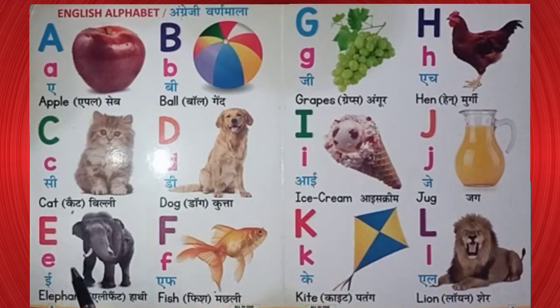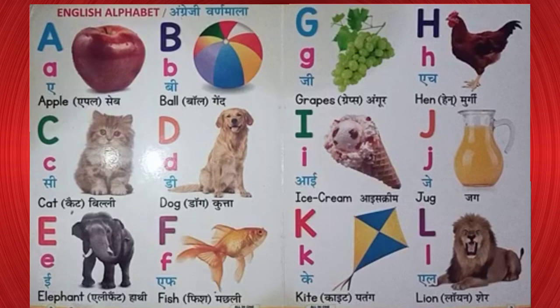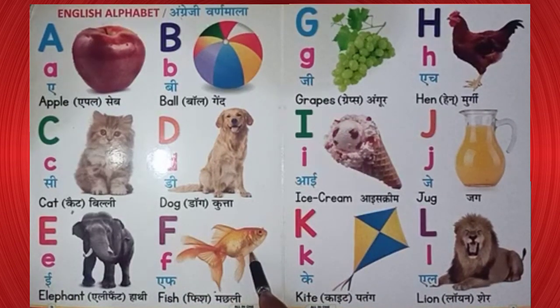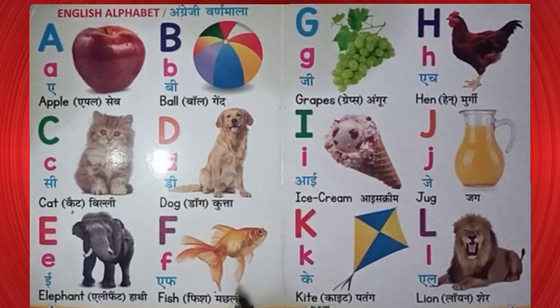E. E for elephant. Elephant means hathi. F. F for fish. Fish means machli.